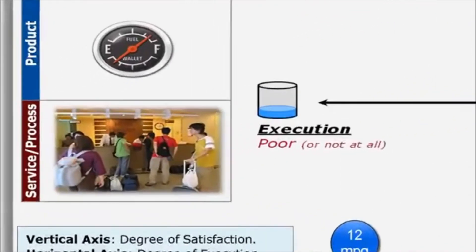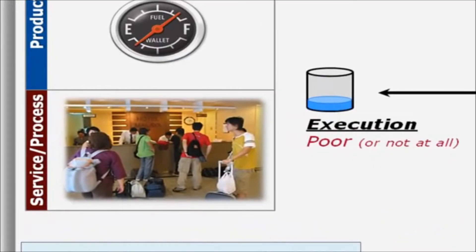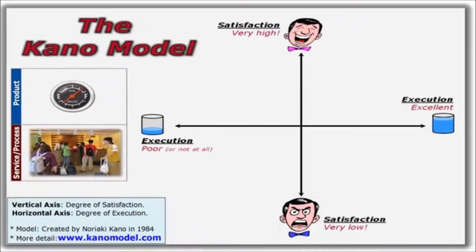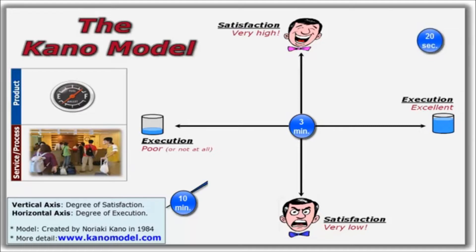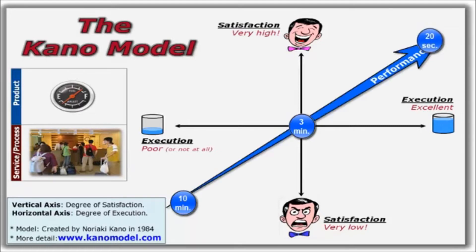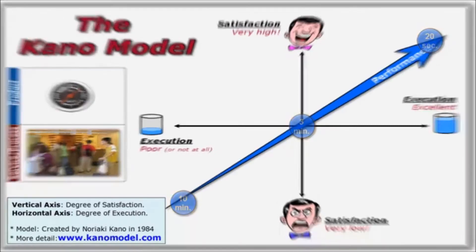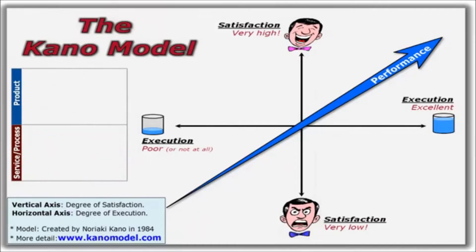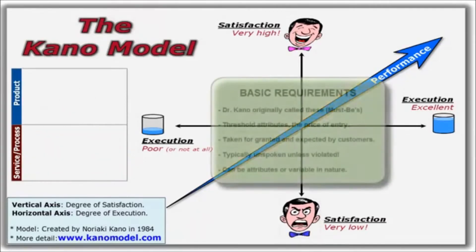A service example is check-in time at a hotel. If the hotel takes 10 minutes to check in, you'd likely be here. 3 minutes here, and 20 seconds up here. This is what the performance needs look like.